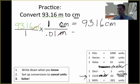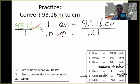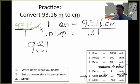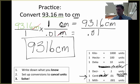All I have to do next is take the whole top row and multiply. I take 93.16 times 1, which is 93.16, and I still have centimeters up here. Then on the bottom, I have 1 times .01, which is .01, and there are no units down there because they've all canceled out. I take out my calculator and do 93.16 divided by .01, and I get my answer, which is 9,316 centimeters. What I've just done is converted 93.16 meters into 9,316 centimeters.